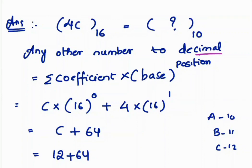To convert any other number system to decimal number system, we need to do the summation of coefficient multiplied with base to the power of position. Here, coefficient is 4C, base is 16, and position is starting from the LSB like 0 and 1.